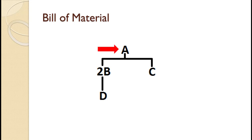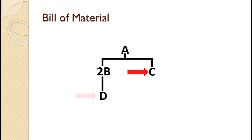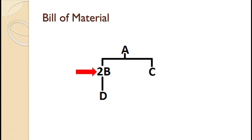The item at the top is the independent demand item. As discussed in prior tutorials, this is the item we are selling to our customers. This A is made up of two Bs and one C. Each B requires one D. The top row is known as Level 0, the next row is known as Level 1, and the following row is known as Level 2.